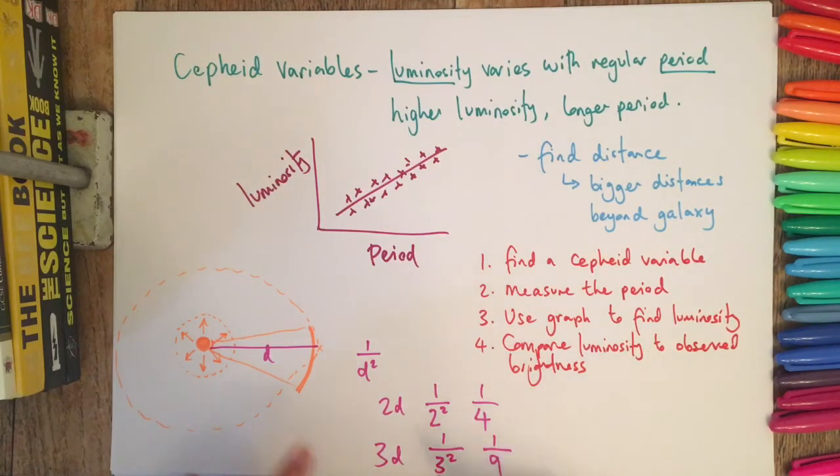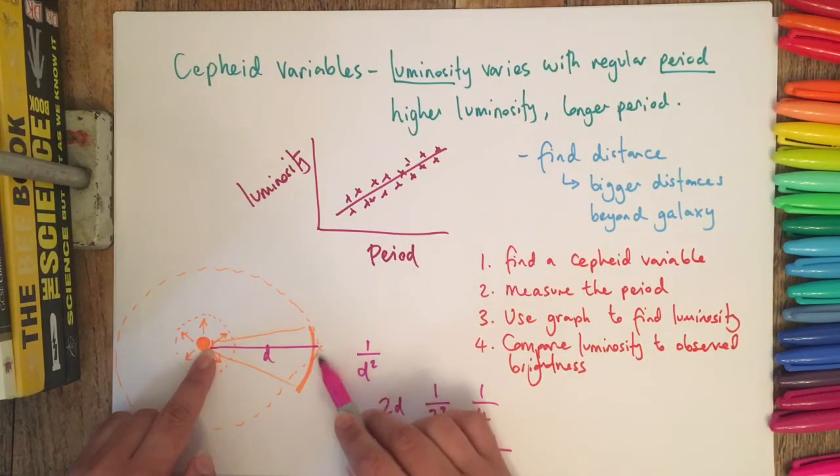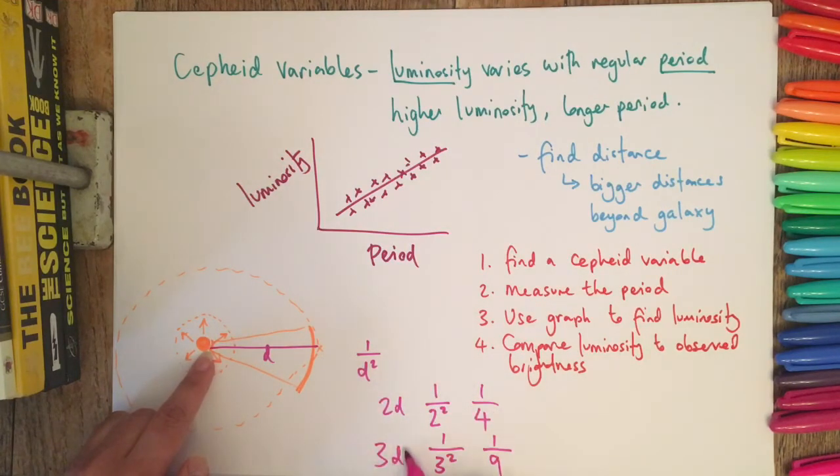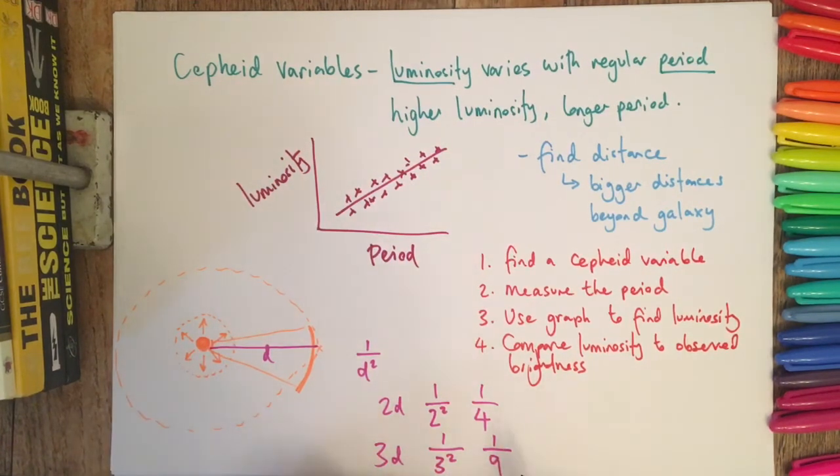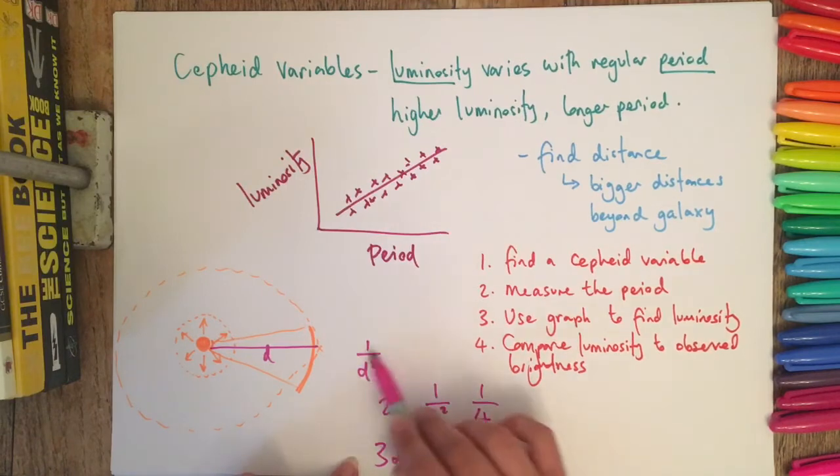...we know what its intrinsic brightness or luminosity is at the very beginning. We can measure what proportion of that brightness we actually observe, which is our observed brightness. Therefore we can find out how many times further away it is because of this inverse square law.